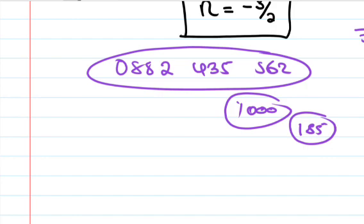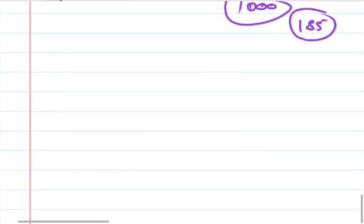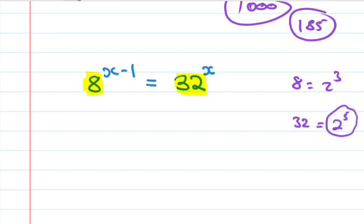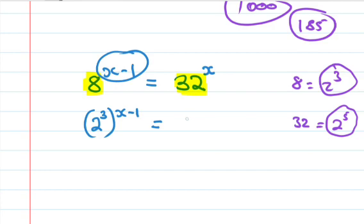Let's now proceed with Question 3: 8 to the power x minus 1 is equal to 32 to the power x. You need to express both bases in terms of base 2. 8 can be written as 2 to the power 3, and 32 can be written as 2 to the power 5. So we have 2 to the power 3, in bracket, to the power x minus 1, is equal to 2 to the power 5, in bracket, to the power x.